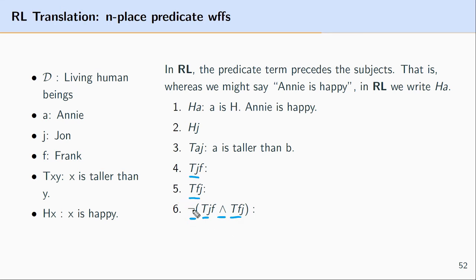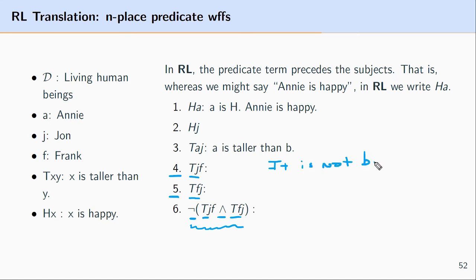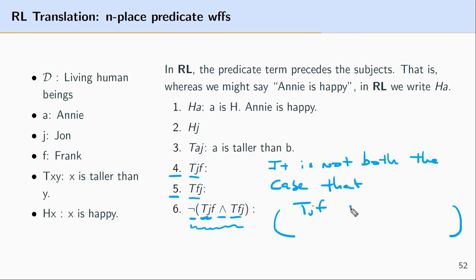In the last expression we have 'not(Tjf and Tfj)'. We already know Tjf means 'John is taller than Frank' and Tfj means 'Frank is taller than John'. So the full expression translates as: 'It is not both the case that John is taller than Frank and Frank is taller than John.'